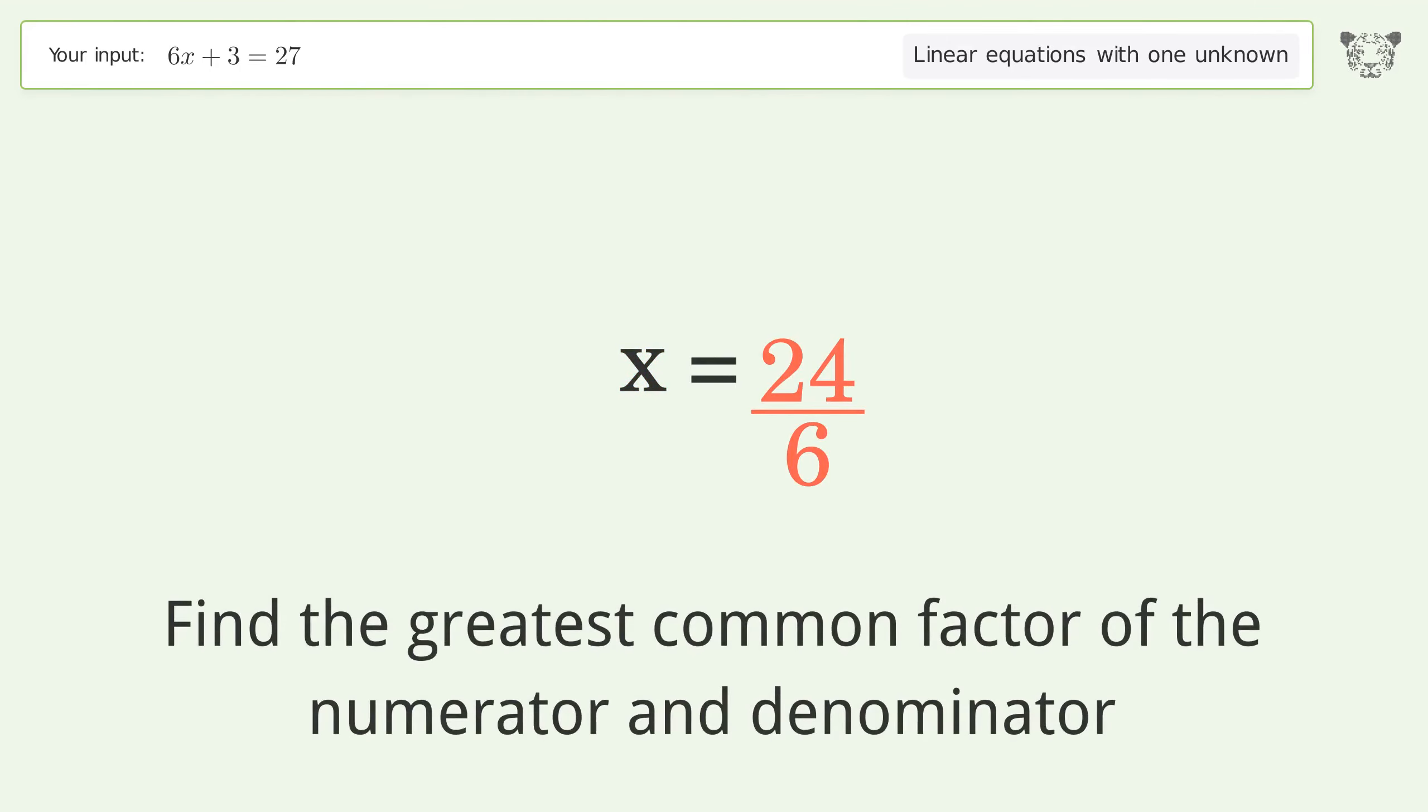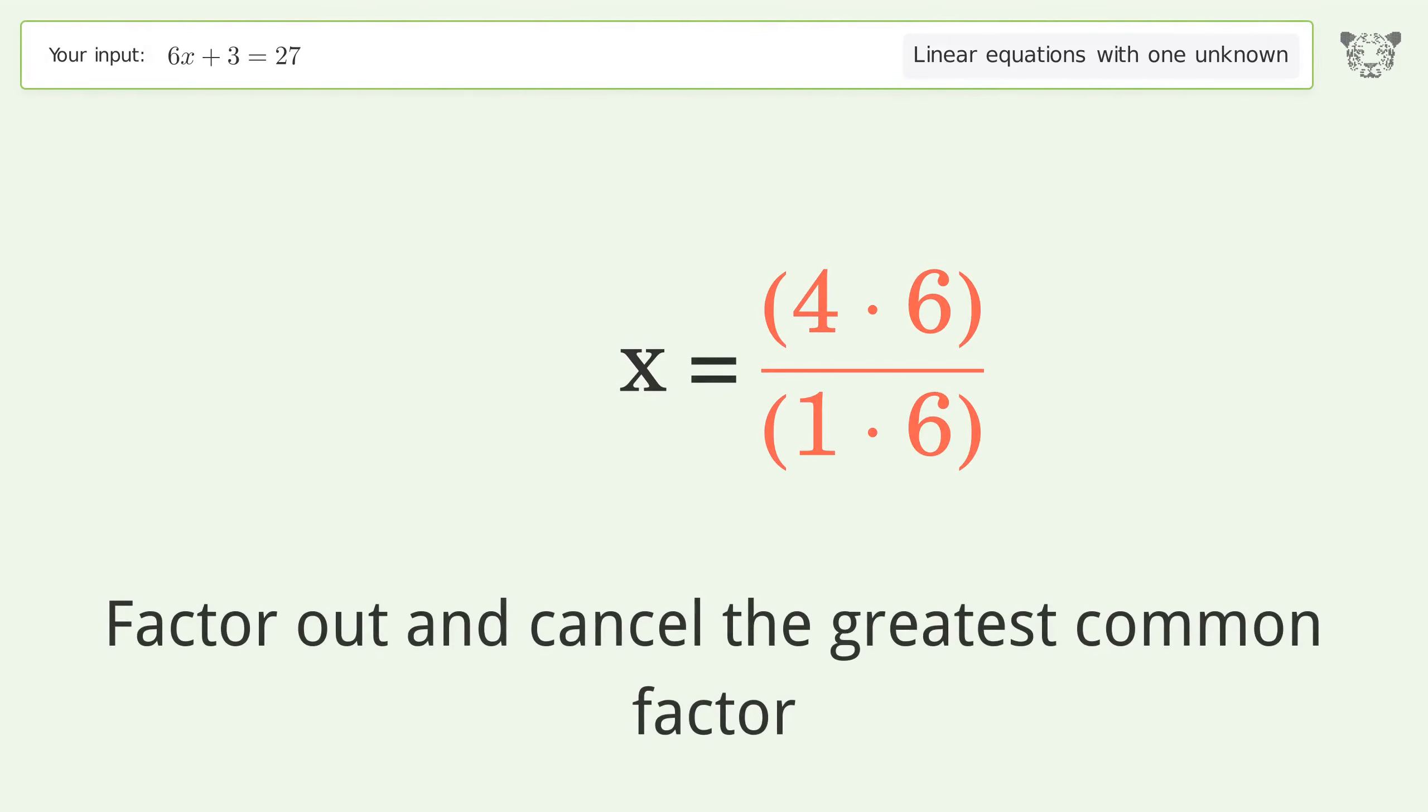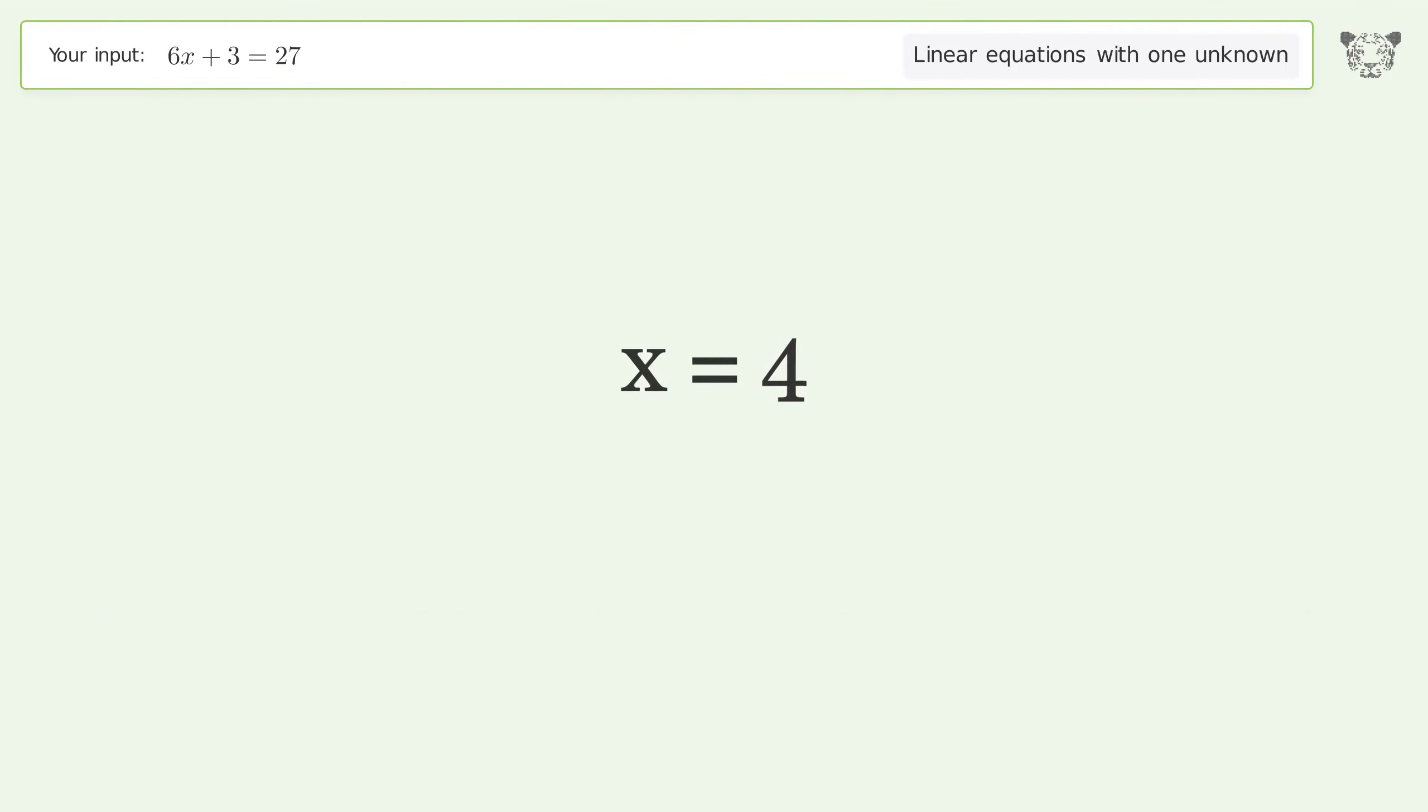Find the greatest common factor of the numerator and denominator. Factor out and cancel the greatest common factor. And so the final result is x equals 4.